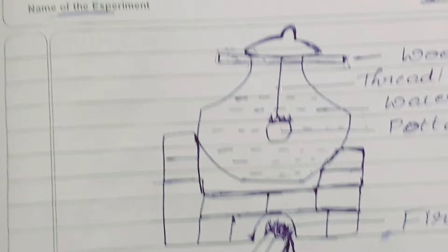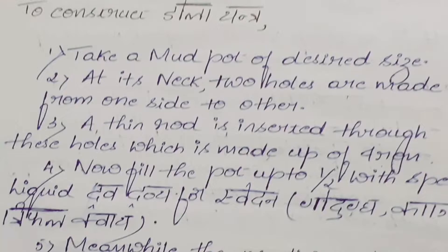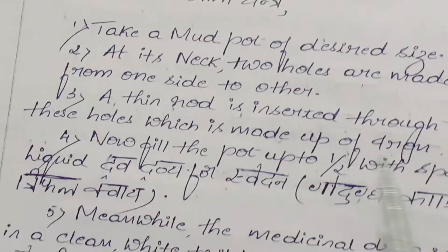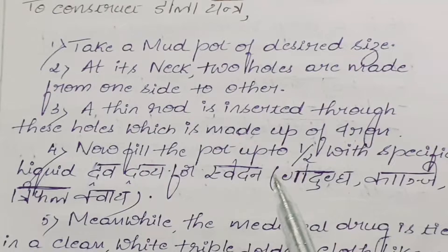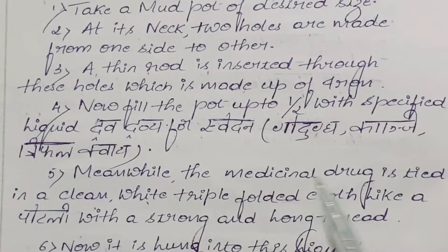A thin rod is inserted through these holes, which is made up of iron. Now fill the pot up to half of its level with specified liquid, that is dravadravya. For Swedana, dravadravya can be godukta, kanji, or triphala kwatha.